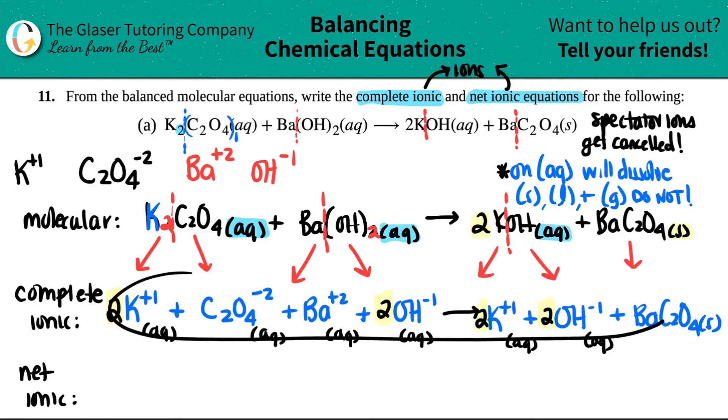Now who are our spectator ions in our complete ionic equation? They have to be exactly identical. So let's look. I have two K pluses on this side, and I have two K pluses on this side. They're identical, so they will cancel. And that's why I say the complete ionic, you have to write the two K pluses. The net ionic, you do not. So in this case, my spectator was K plus one. Are there any other ones? On the product side I have a 2OH minus one. And look, I have a 2OH minus one. So that goes bye-bye.